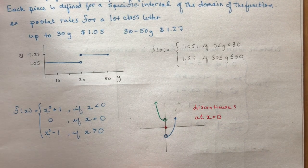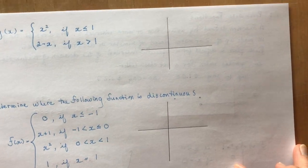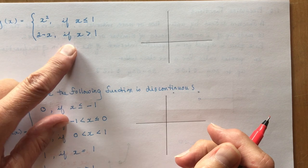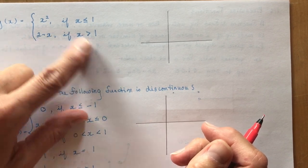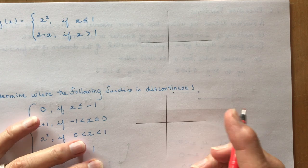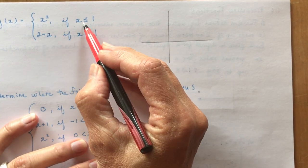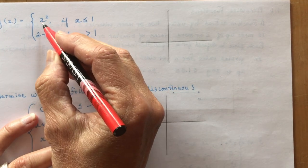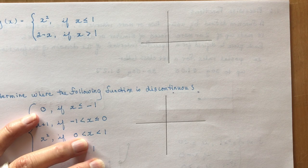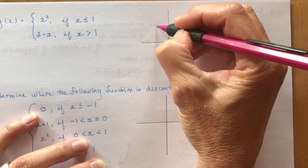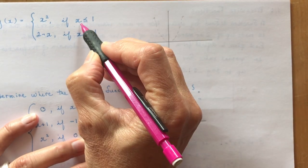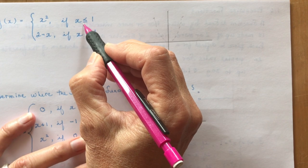Let's go on to a slightly more challenging one. g(x) = x² if x ≤ 1, and 2 − x if x > 1. You need to know what kind of functions these are. For x² with x ≤ 1, I want to know what happens when x = 1. You know how to draw x² — it goes like a parabola. But there's a domain restriction: x must be less than or equal to 1.